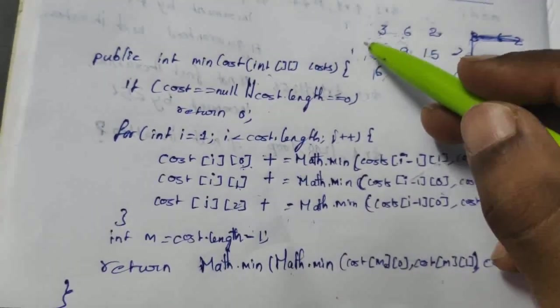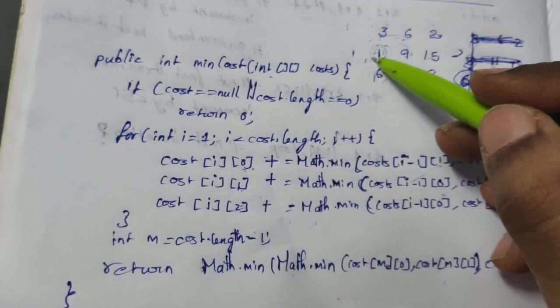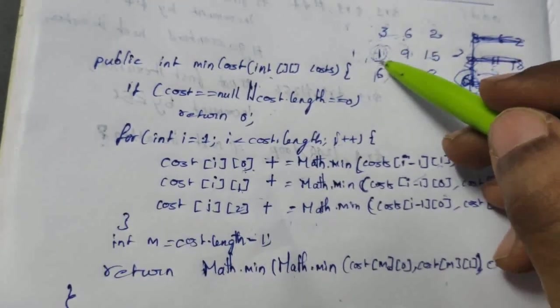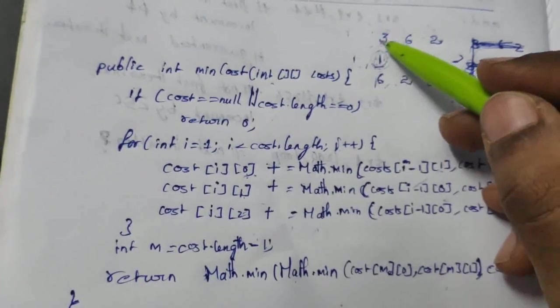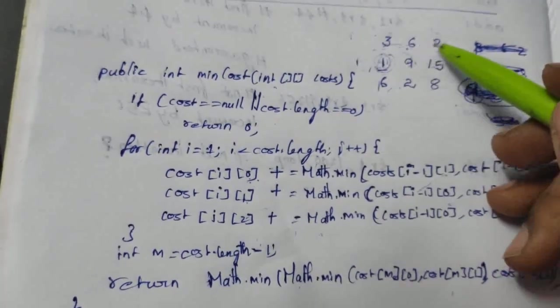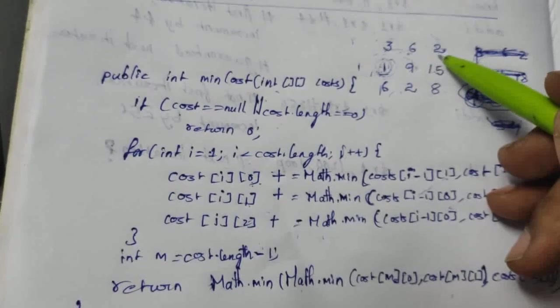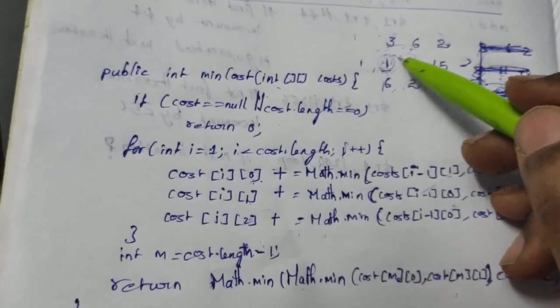Since we are looking back, let's start with the second house which is index 1. If you assume we are going to paint with this color, obviously it is not painted with this. So we have to take minimum of these 2 which is 2, so we are going to add 2 to the 1.